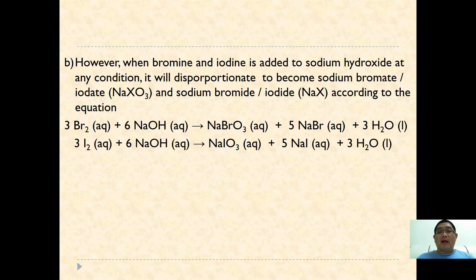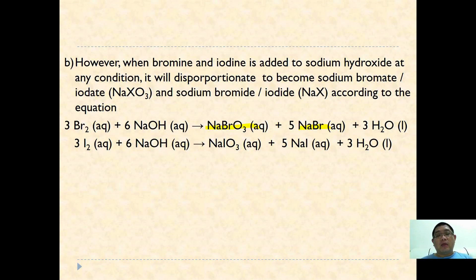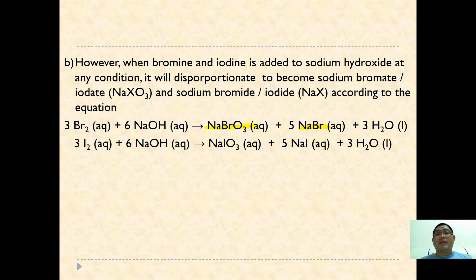As for bromine and iodine, when added to sodium hydroxide they will only form one single product — both will form NaBrO₃ or NaIO₃ and NaBr or NaI simultaneously. Unlike the reaction between chlorine and sodium hydroxide, this is a one-step reaction regardless of conditions. The oxidation state changes from zero to +5 and −1.